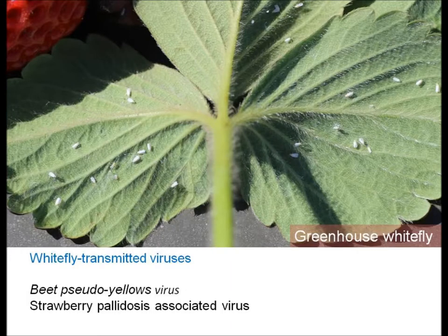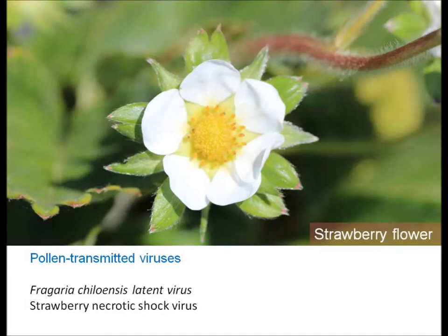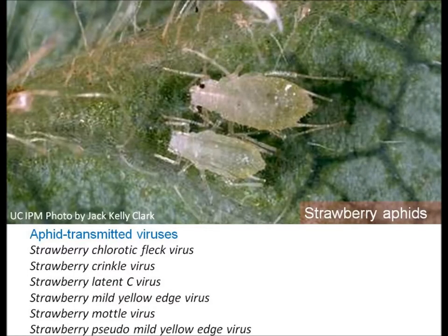Whitefly-transmitted viruses include beet pseudo yellows and strawberry pallidosis associated viruses. Examples of non-whitefly transmitted viruses include strawberry necrotic shock virus, transmitted by thrips, pollen, and seed; strawberry latent ring spot virus, transmitted by nematodes and seed; and strawberry crinkle, strawberry mottle, and strawberry mild yellow edge viruses, transmitted by aphids.